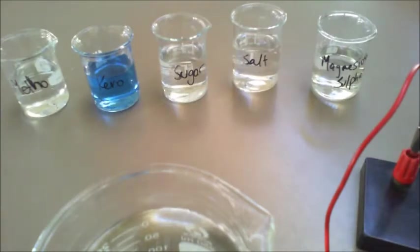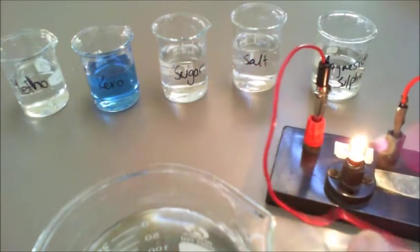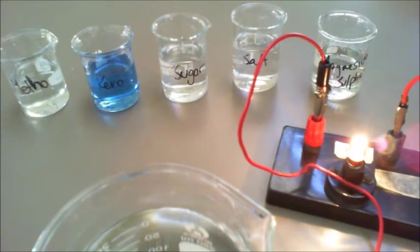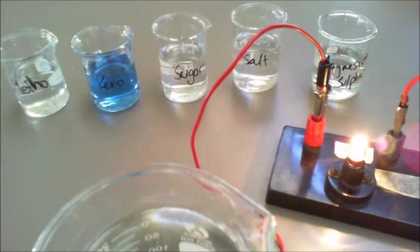Okay, now that you've written down the experiment write-up, what we've got here is five different liquids. We have methylated spirits, kerosene, a sugar solution, a salt solution, and a magnesium sulphate solution. What we're going to do is try and test the conductivity of each of those liquids. To do that, I have a very simple circuit here that will light up if the particular liquid is conductive. If it doesn't light up, then it doesn't conduct electricity.